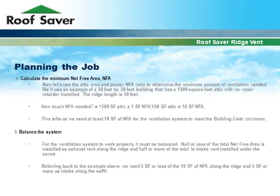Now let's use the attic area and proper NFA ratio to determine the minimum amount of ventilation needed. We'll use an example of a 50 foot by 30 foot building that has a 1,500 square foot attic with no vapor retarder installed. The ridge length is 50 feet. To find the required net free area, multiply 1,500 square feet by the 1 to 150 ratio. This tells us we need at least 10 square feet of net free area for the ventilation system to meet the building code minimum.